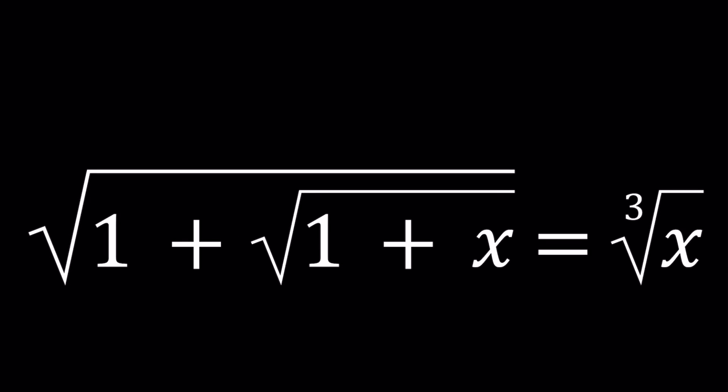Hello everyone. In this video, we're going to be solving a nice radical equation from Finnish math olympiads. We have square root of 1 plus the square root of 1 plus x equals cube root of x, and we're going to be solving for x values.